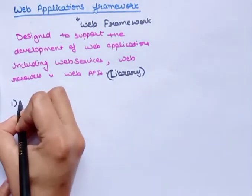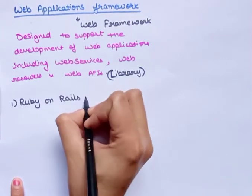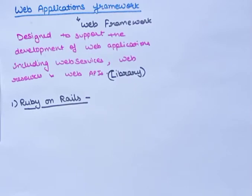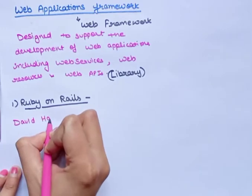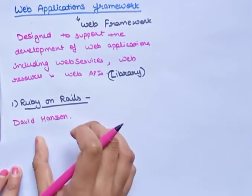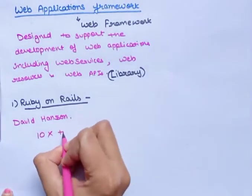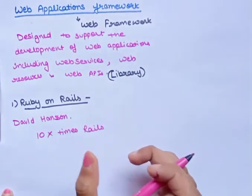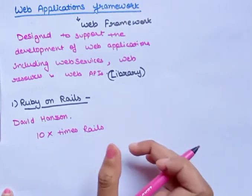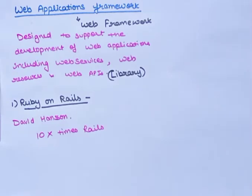Let's start with the first, the topmost framework: Ruby on Rails. This is an extremely productive web application framework written by David Hansen. One can develop an application at least 10 times faster with Rails than a typical Java framework. Moreover, Rails includes everything needed to create database-driven applications.